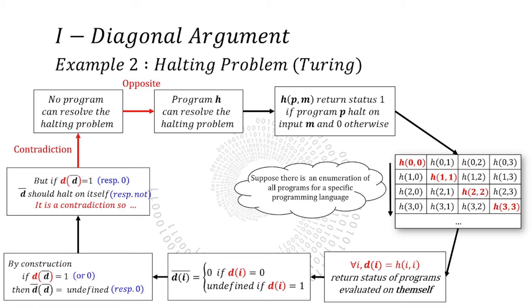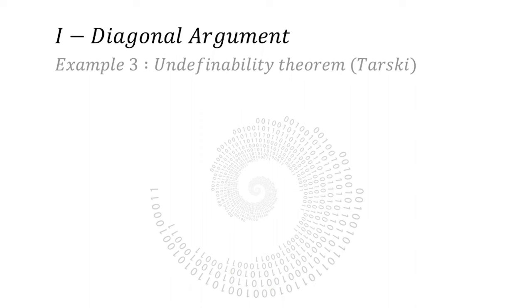We assume the opposite. There is always an enumeration. A diagonal term. A counter diagonal term. And a contradiction. Let's see now our last example.